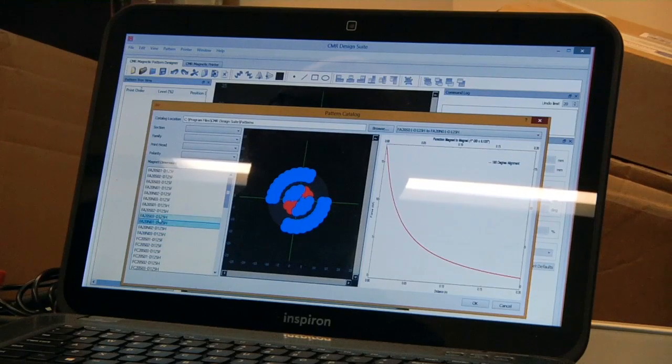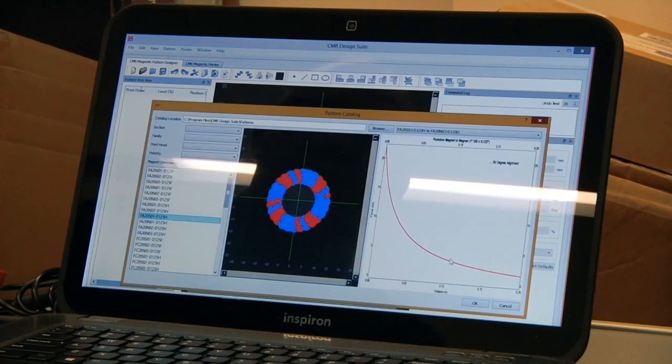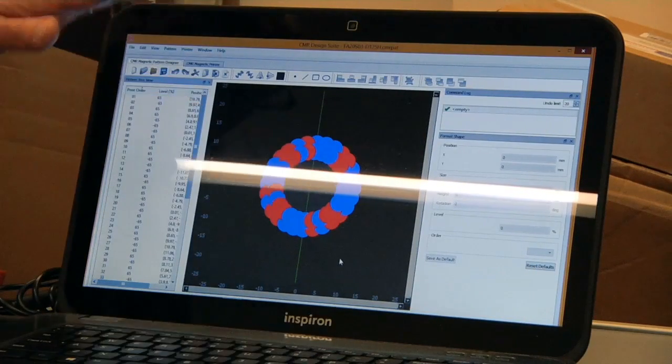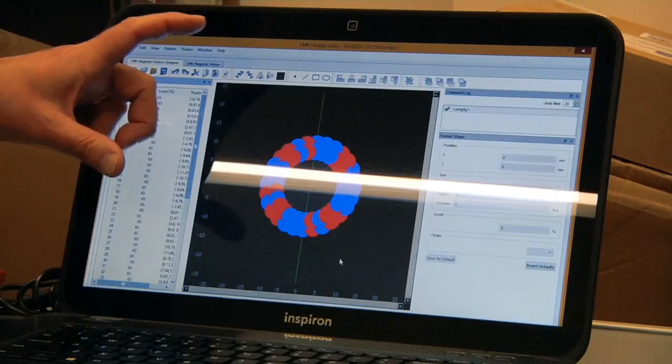You can also use the pattern editor to create your own devices. Typically the way we see people operate is they will start with a magnet pattern that's pre-engineered and then maybe make modifications.